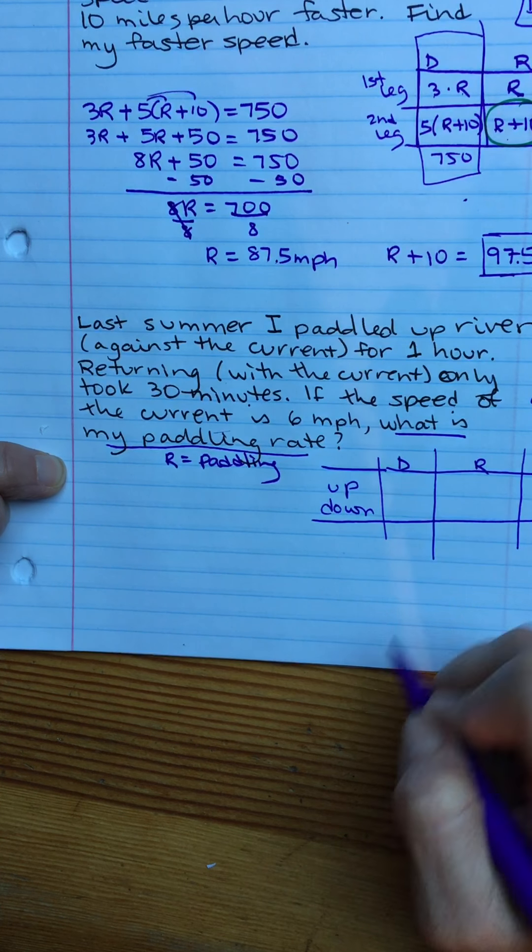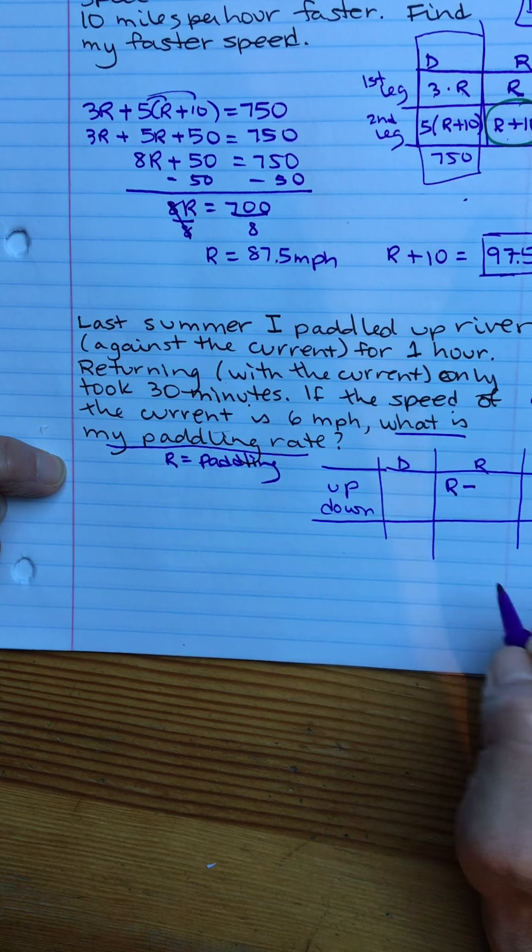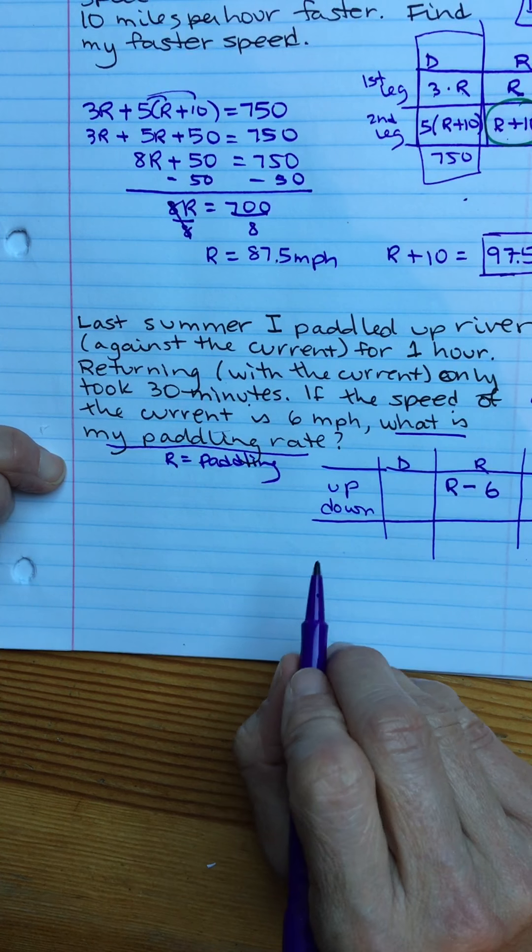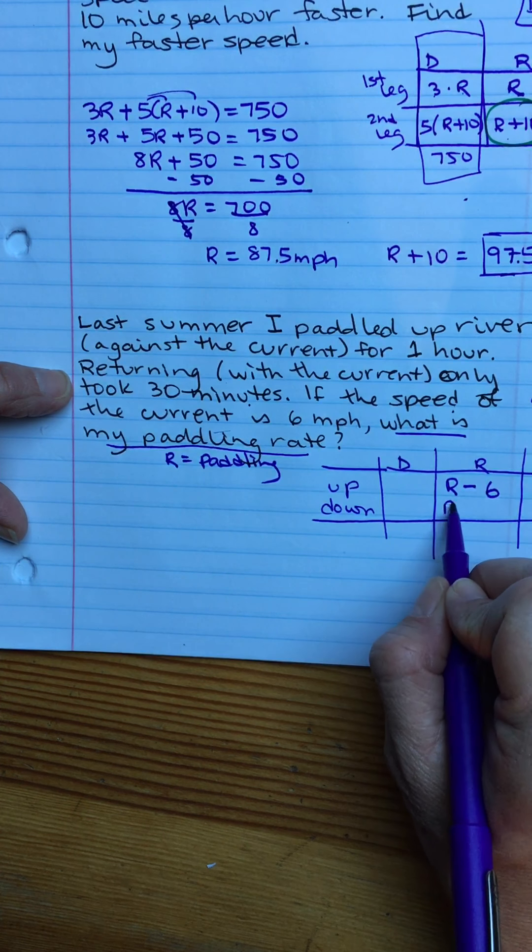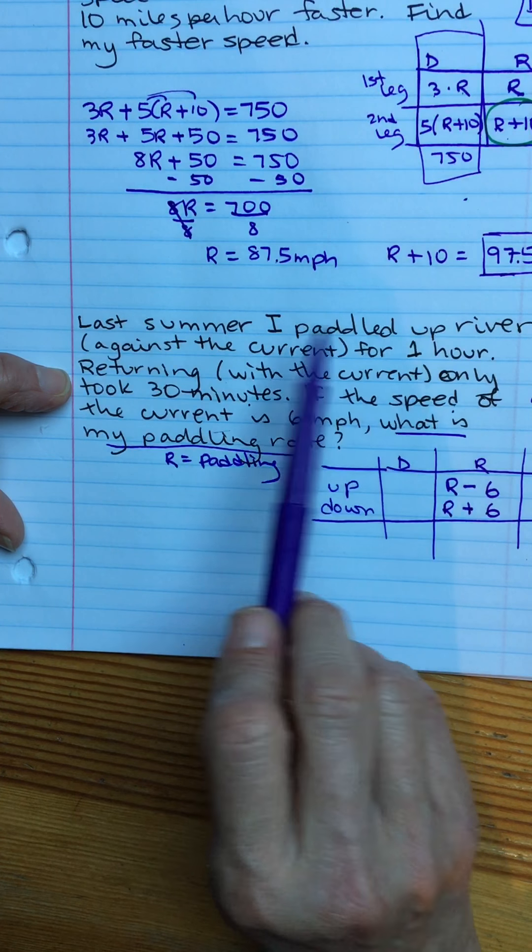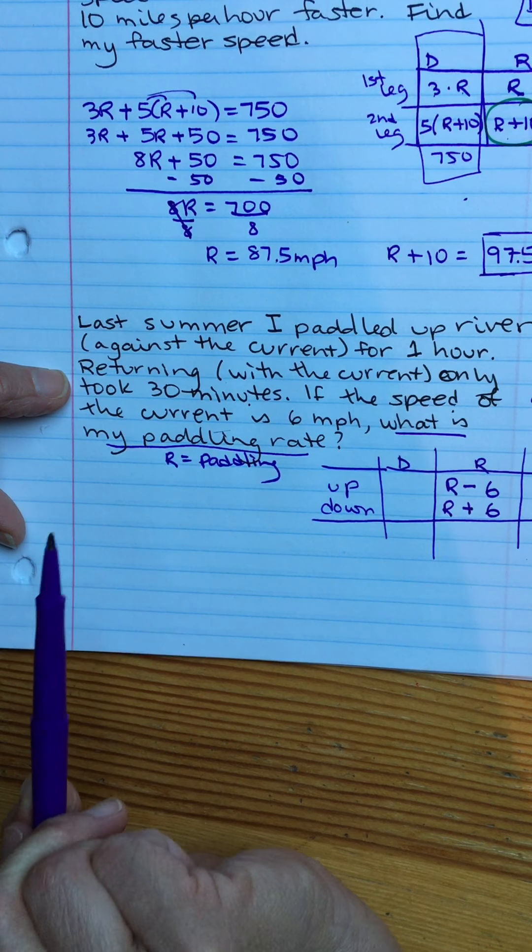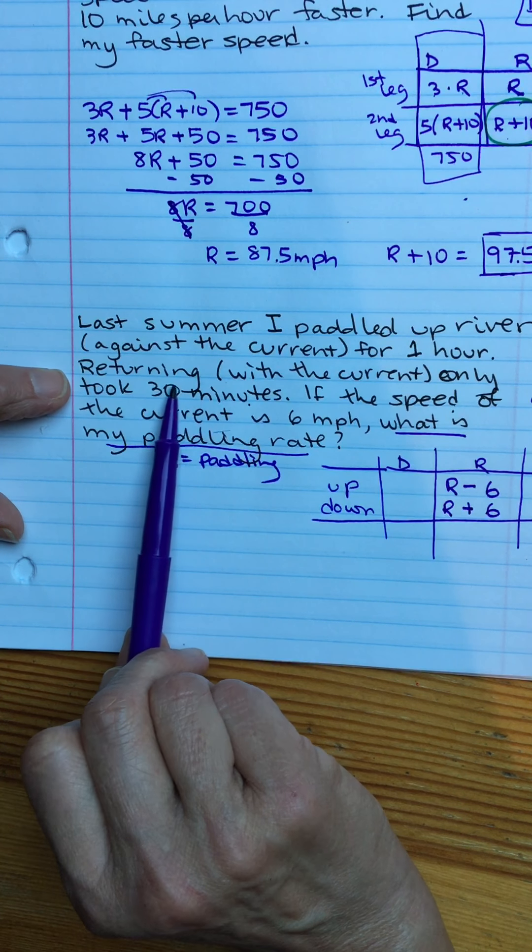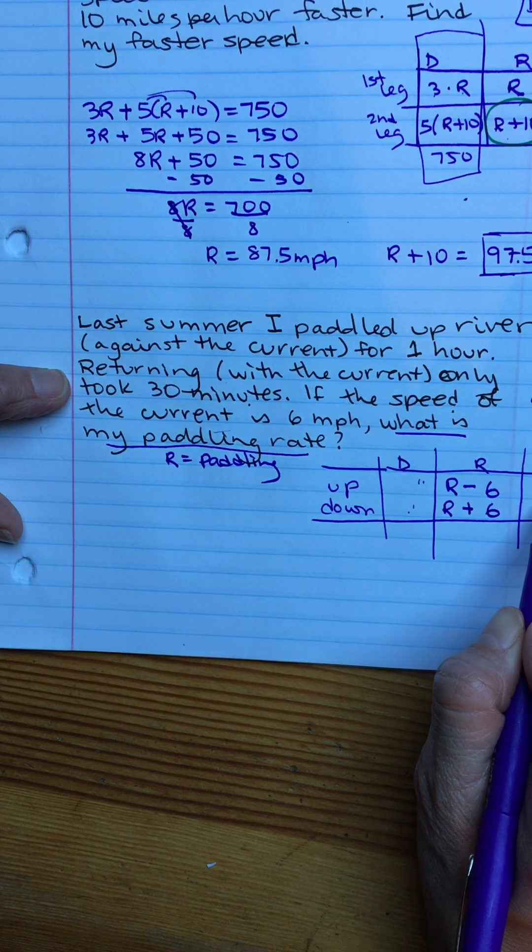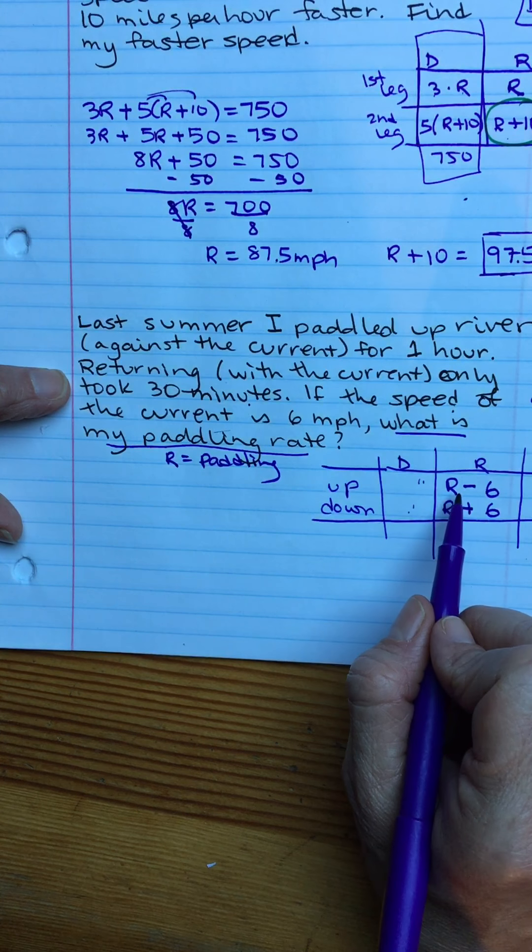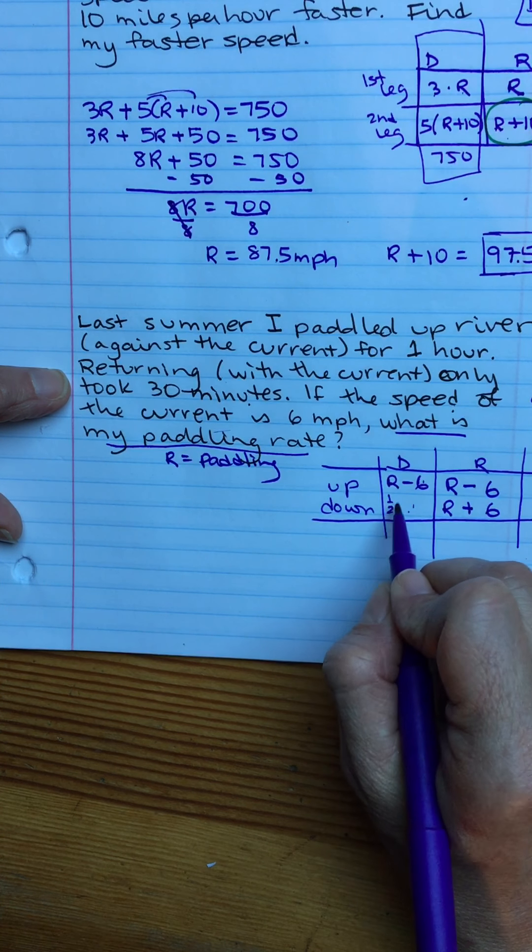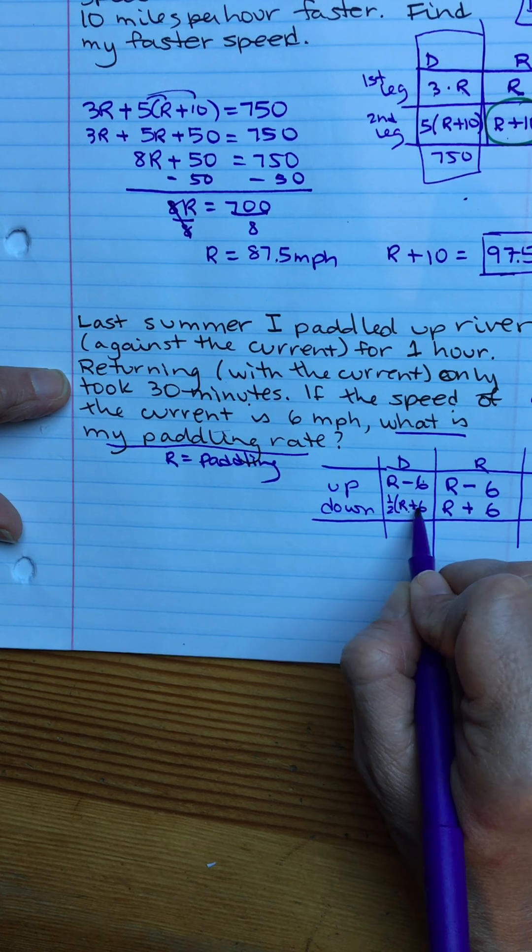If I'm going up river, my net rate is however fast I can paddle minus what the current's doing. So I have to overcome the current and then keep paddling. So that will be R minus six. So coming down then, it's however fast I can paddle plus whatever that current river can do to help me. So plus six. There's no information given about how far I paddled except that however far I went up, I came back the same amount. So these two distances are going to be the same. Let's do rate times time in each of the cells. So one times R minus six, that's just R minus six. And one half times parentheses because R plus six is two things. So one half times R plus six.